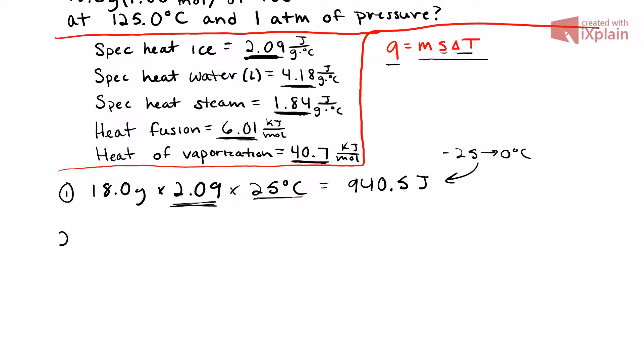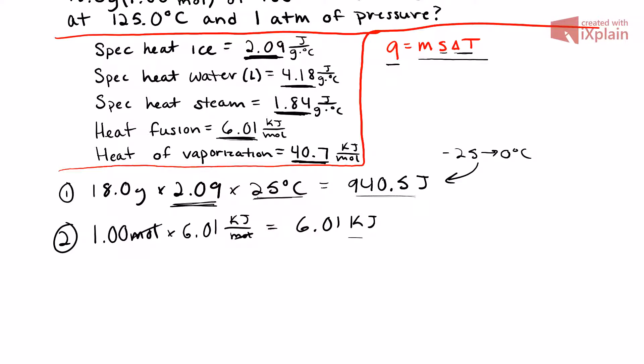Step 2: we need to melt that ice, so we use the heat of fusion. We have 1 mole of ice, and the heat of fusion for ice is 6.01 kilojoules per mole. The moles cancel out, leaving us with 6.01 kilojoules for step 2.